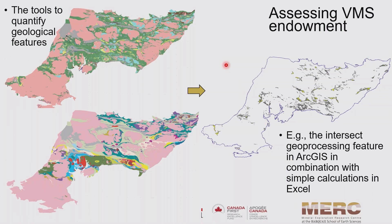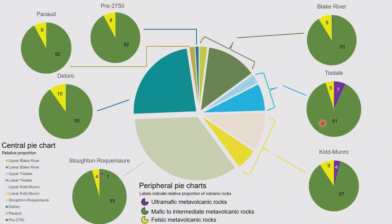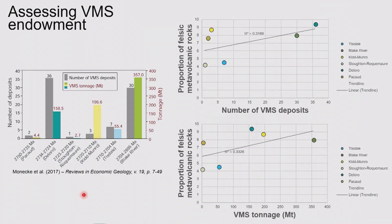Just starting with the felsic rock — what we can do is combine these two compilations. We can first isolate all the felsic rocks, that's what you see on the right side here. Then we can start constraining with the assemblages what the felsic rocks are within each assemblage — what is the ultramafic, what are the mafic proportions. Here you just have all the pie charts in the middle showing the assemblages. Looking at the Blake River, you can see about 9% of the Blake River is felsics. Not a lot of felsics in the Stoughton-Roquemaure, which might play into the conclusions Octavio drew from his geochemical analysis.